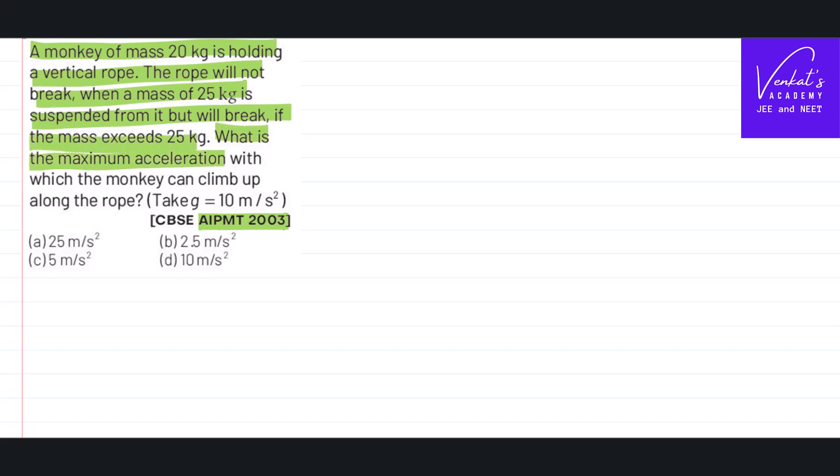What is the maximum acceleration with which the monkey can climb up? Given that g is 10. Let us try to understand what the meaning of this question is.